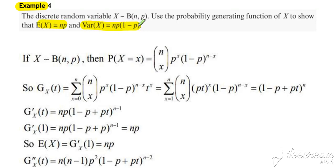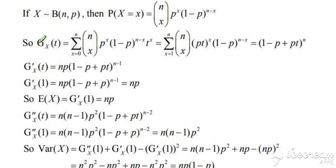In this example, we're going to derive the results for the mean and variance of a binomial distribution. Our probability generating function for a binomial is the binomial probability formula multiplied by t^x, which gives us the standard result from the formula booklet.